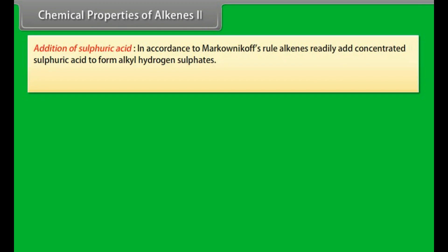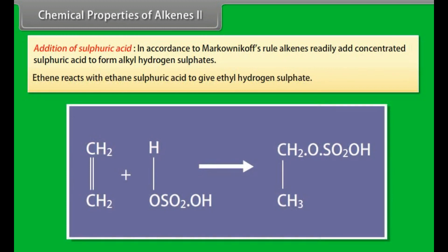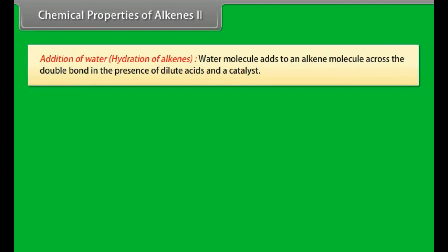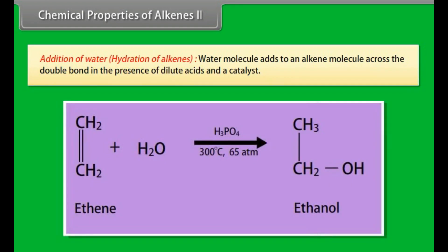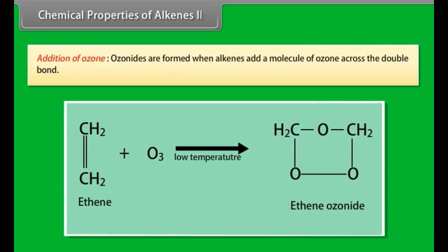Chemical properties of alkenes Part 2. Addition of sulfuric acid. In accordance to Markonikov's rule, alkenes readily add concentrated sulfuric acid to form alkyl hydrogen sulfates. For example, ethene reacts with sulfuric acid to give ethyl hydrogen sulfate. Addition of water. Hydration of alkenes. Water molecules add to an alkene molecule across the double bond in the presence of dilute acid and a catalyst. For example, ethene gives ethanol when a mixture of ethene and steam is passed over phosphoric acid and silica under a pressure of 65 atmospheres and at 300 degrees centigrade. Addition of ozone. Ozonides are formed when alkenes add a molecule of ozone across the double bond. For example, ethene gives ethene ozonide.